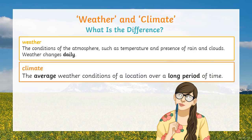Climate, on the other hand, is the average weather condition of a location over a long period of time. Here in the Bahamas, we have a climate that is mostly sunny all year. That is our climate — we have a warm climate.